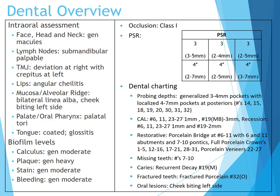Here is our dental overview. For the intraoral assessment, with the face, head, and neck, he only presented with generalized macules. The lymph nodes are submandibular palpable, and the TMJ presents with deviation at the right with crepitus at the left. The lips have angular cheilitis.